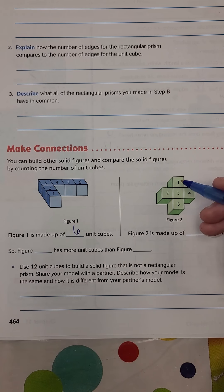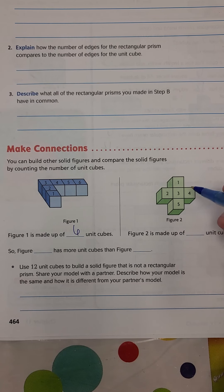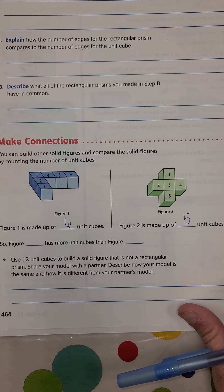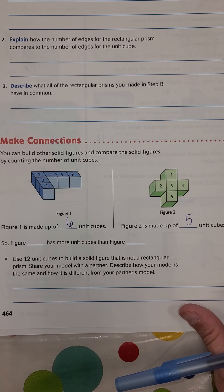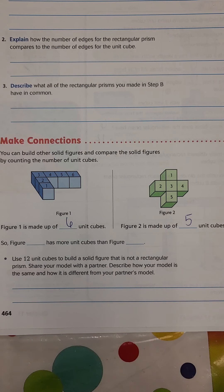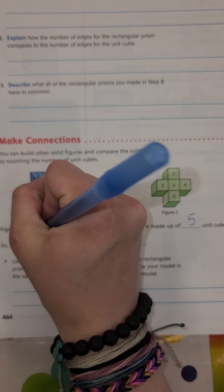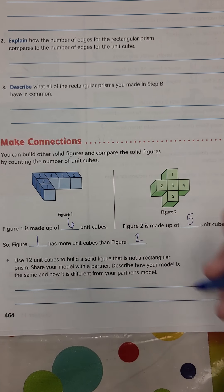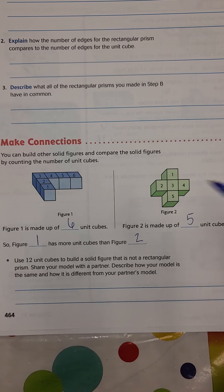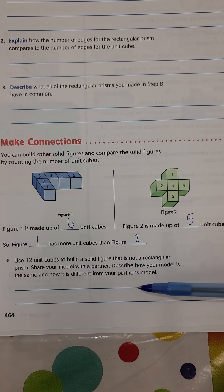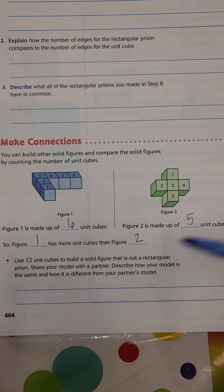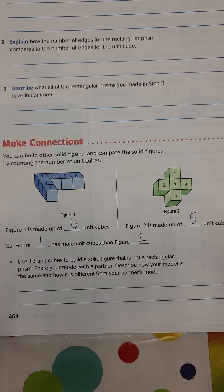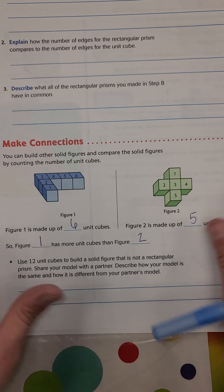And let's look at this one. This one's made up of one, two, three, four, five. This one's made up of five unit cubes. So figure blank has more unit cubes than figure blank. Which one has more unit cubes? We would say figure one has more unit cubes than figure two. And again, since we don't have this, we're not going to be able to do the cubes. But as long as you get this and you're able to count that they're unit cubes, I feel like you'll be fine.